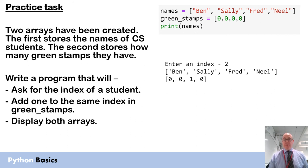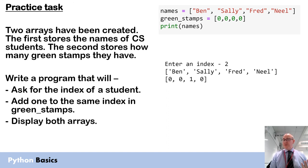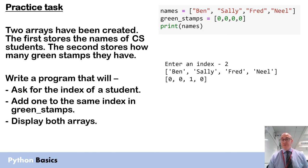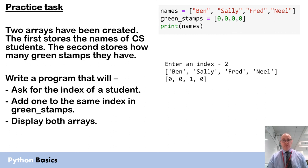What I want you to do is code something that asks for the index of the student - not the name, their index number. In the example I've entered the value of 2, which is Fred. It then has to add 1 to that student's green stamp value - if it's 0 it becomes 1, if it's 1 it becomes 2. Then it displays both arrays. Index 2 has had 1 added onto Fred's green stamp total. This might seem slightly complicated but it's really simple code - stop the video, have a hard think, try it, and if you don't know the answer is on the next slide.